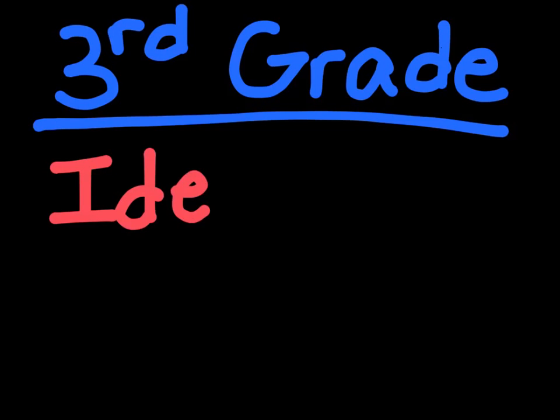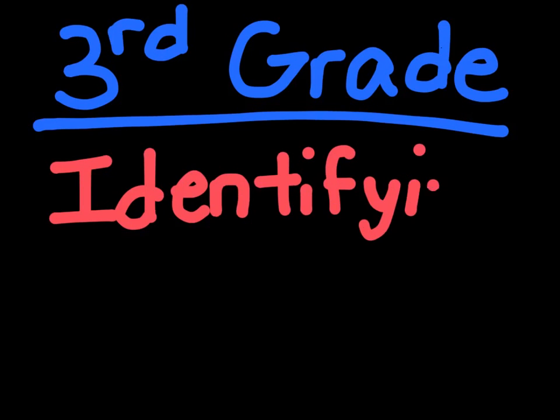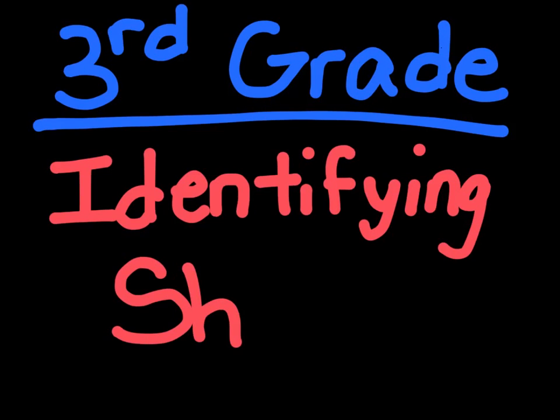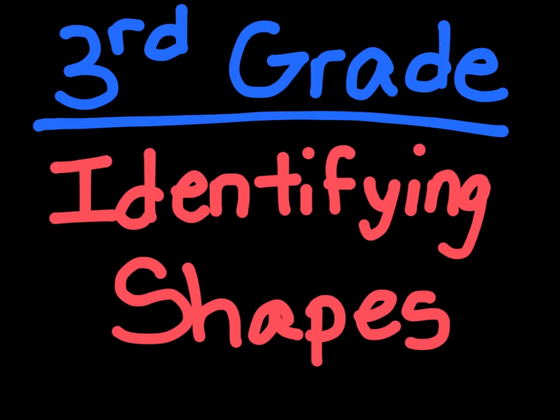What's up guys, so today we're going to talk about third grade math, and our topic is going to be about identifying shapes. You guys have definitely heard of some simple shapes like a square, a rectangle, a circle, a triangle, a hexagon, a decagon, an oval. I'm going to talk exactly about that today, so let's get started.